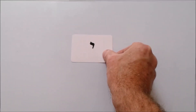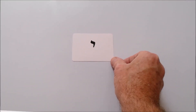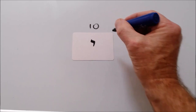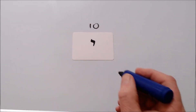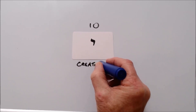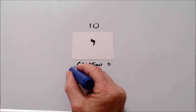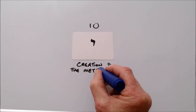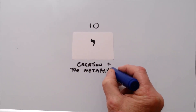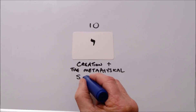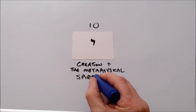This is the Yud, the tenth letter of the Alephbate, having the value of ten. It is the symbol and essence of creation and the metaphysical — others say spirituality.